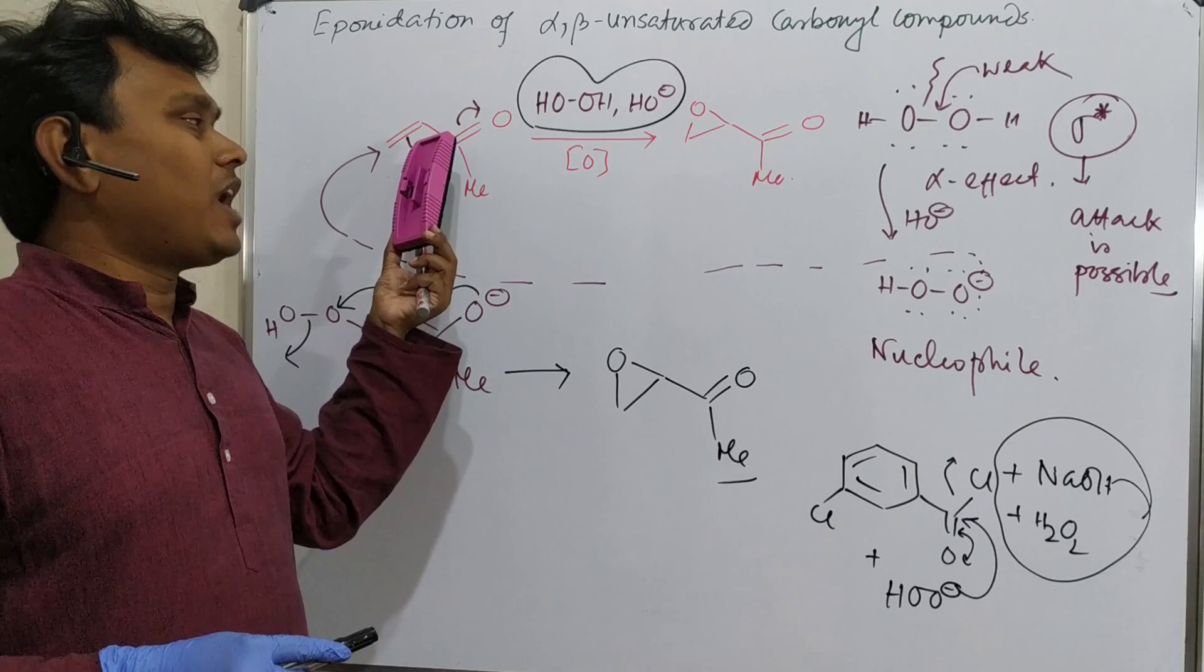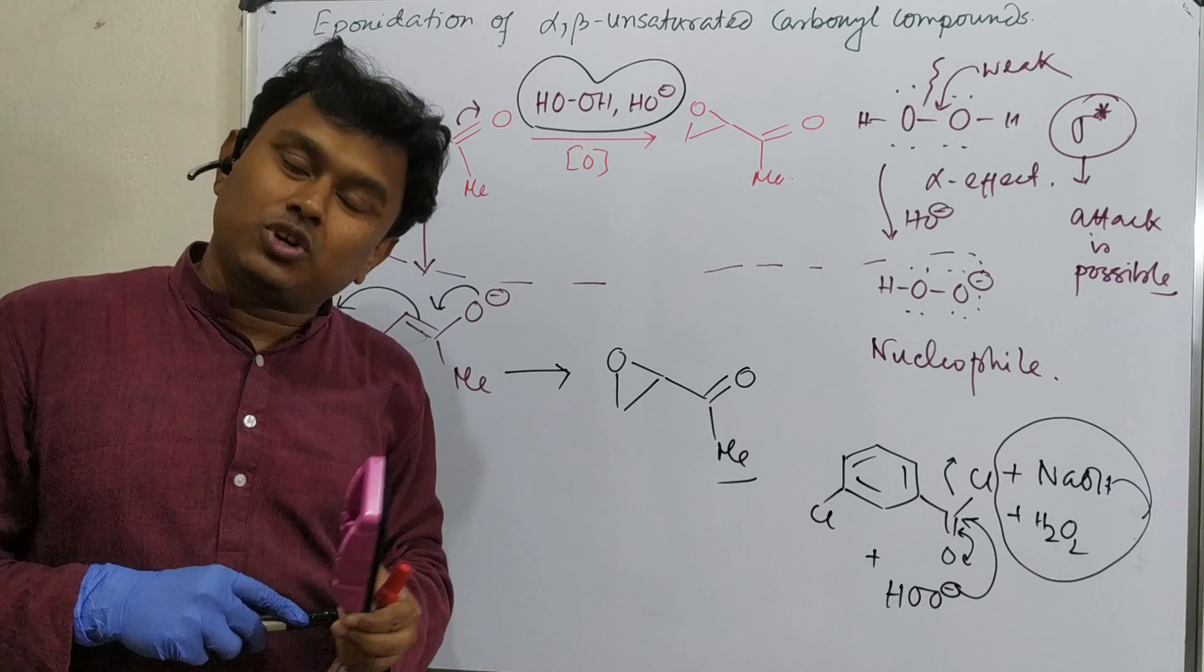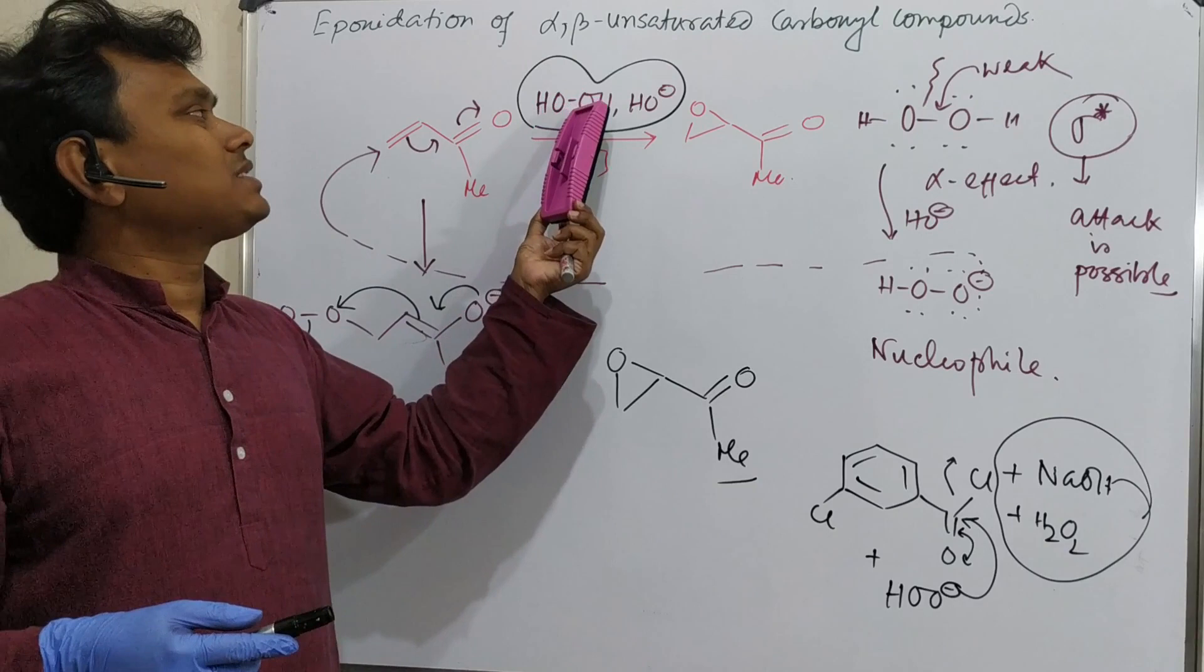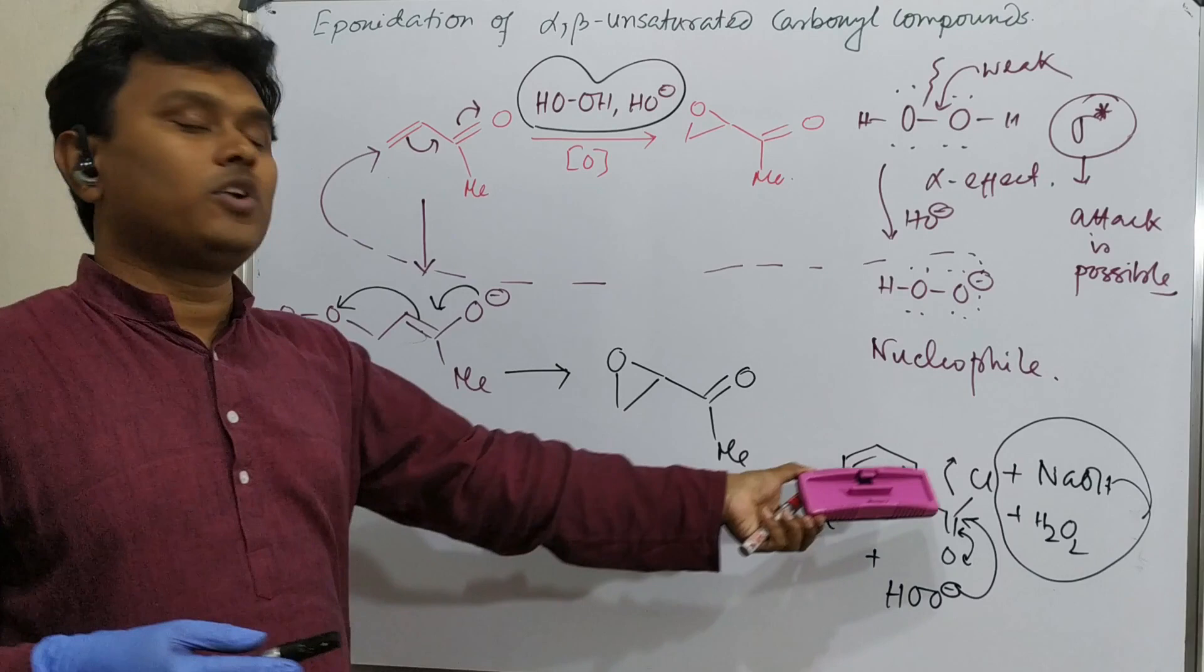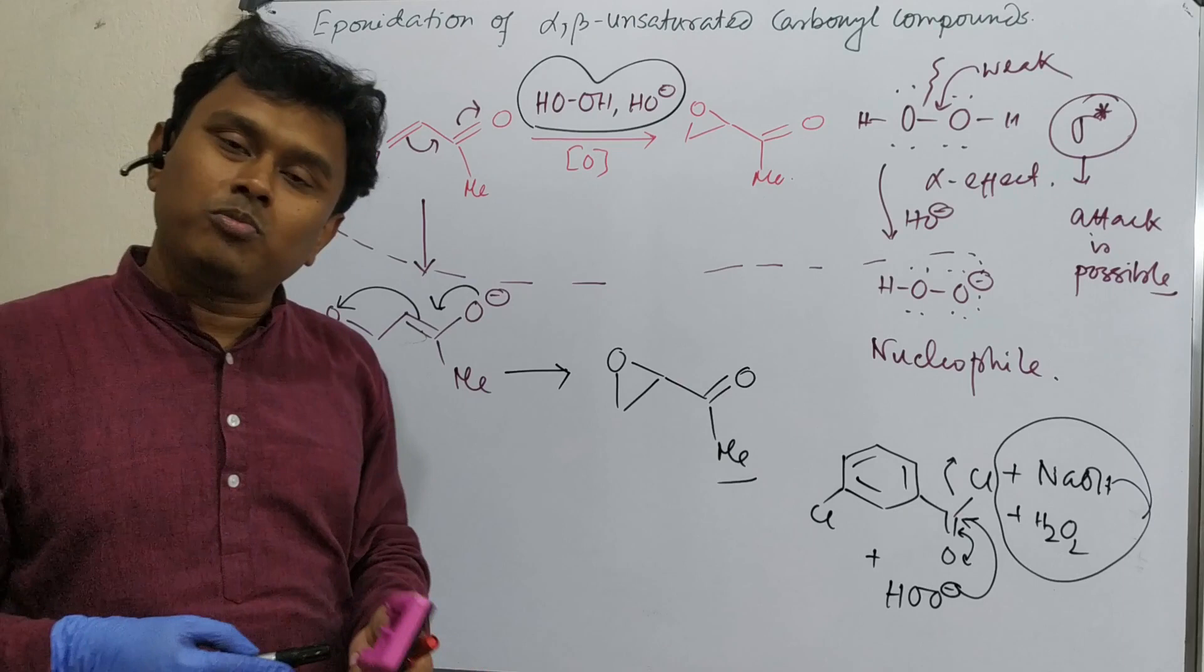So this is the end of this discussion. So what have we learned today? Why epoxidation of alpha-beta unsaturated carbonyl compound could not be achieved using traditional epoxidation method, that is peroxy acid. Second point, how to achieve it using sodium hydroxide and hydrogen peroxide. And additional benefit is that peroxy acids are prepared from this combination, so we are using a core reagent. So that is beneficial for this method - overall mechanism.